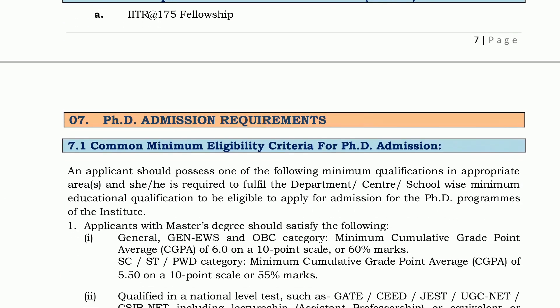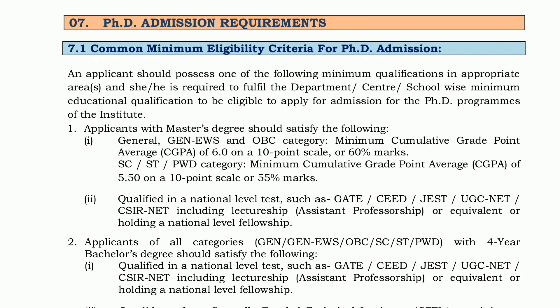Now talking about PhD admission requirements — first, common minimum eligibility criteria. Applicants with a master's degree should have 60% or 6.0 CGPA for General, EWS, and OBC category. For SC, ST, and PWD category, a CGPA of 5.5 or 55% marks is required.